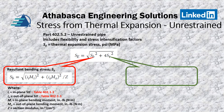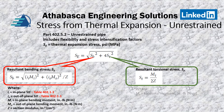The torsional stress often doesn't come into play very much. If you do have torsional stress, you divide the torsional moment by two times the section modulus to get the torsional stress, and then you have your full thermal expansion stress equation.